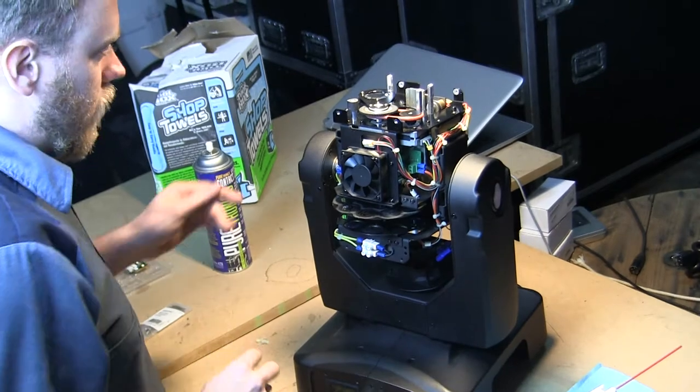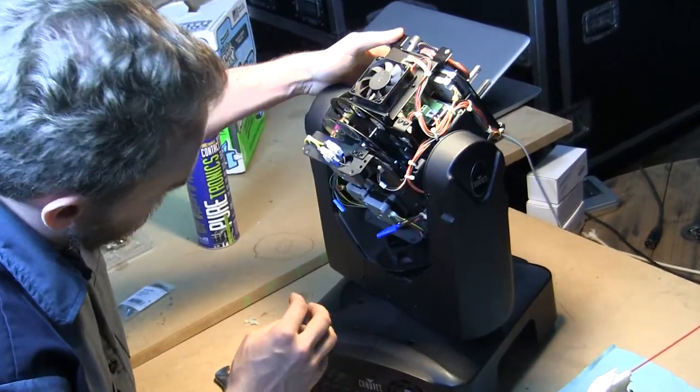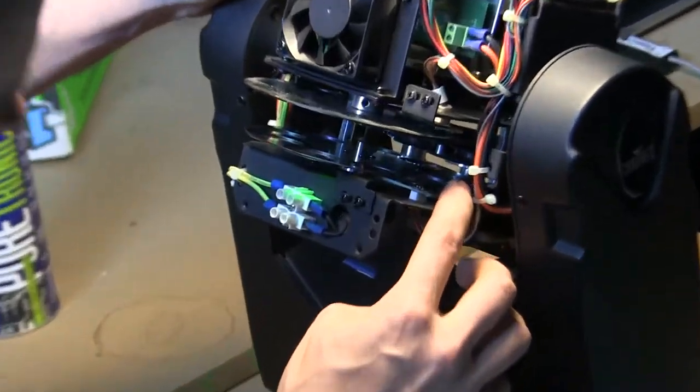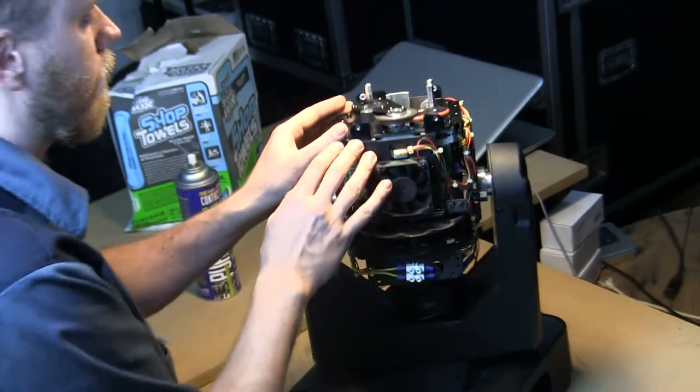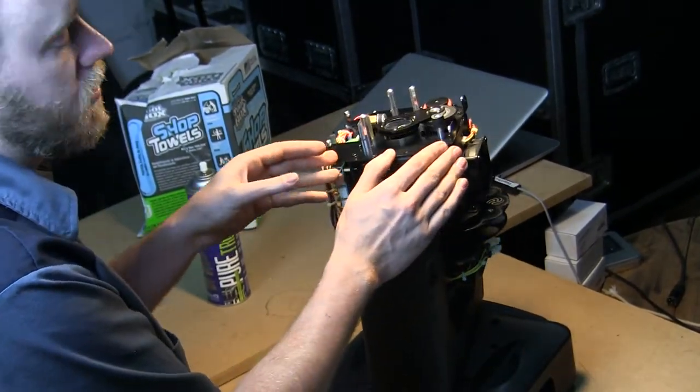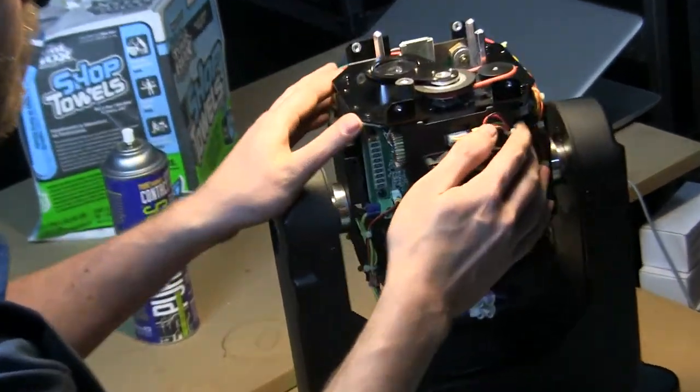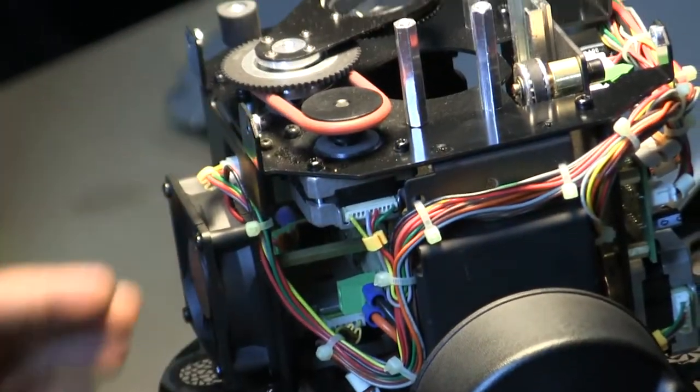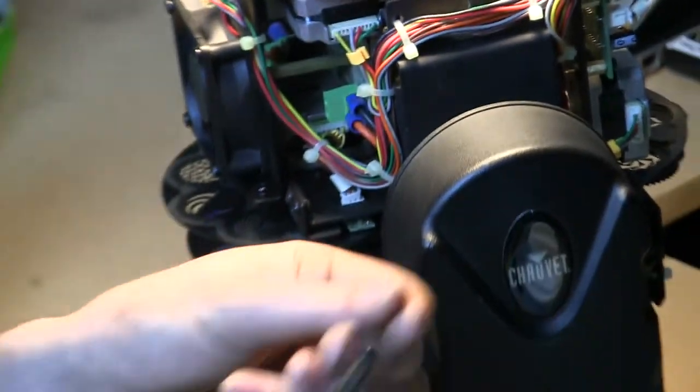So next we're going to try and start working on cleaning the lenses. Now again, I told you I'm not going to get all the way in so that I can reach all of the internal lenses. It requires taking out multiple frames, multiple assemblies, a little bit too much work for what we're going to do. Besides just replacing the diode, you're going to notice an incredible amount of difference.